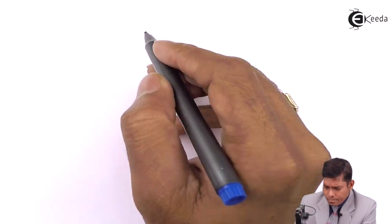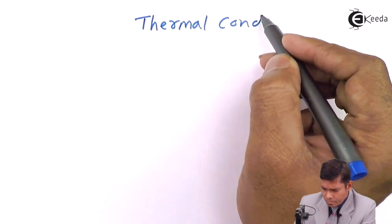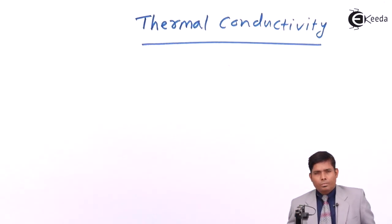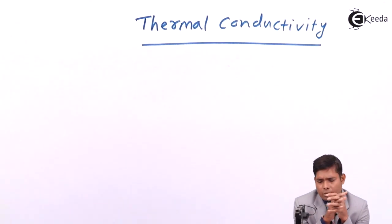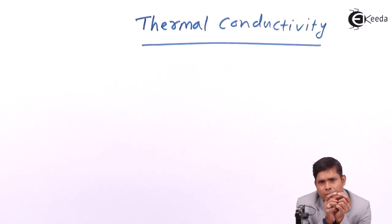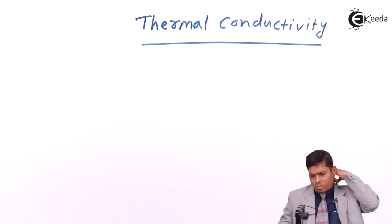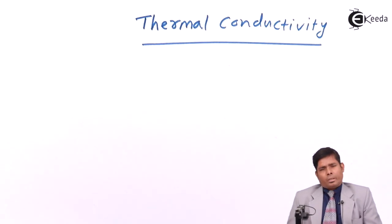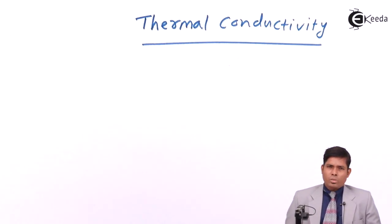Let's discuss thermal conductivity. Thermal means related to heat; conductivity means transfer. Resistivity means the property to resist, and conductivity is the property to allow heat to flow through it. So basically, thermal conductivity is how easily a substance can allow heat to conduct through it.